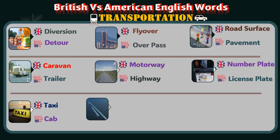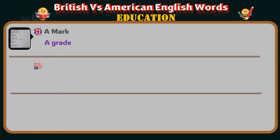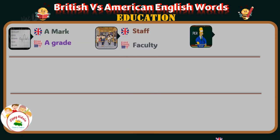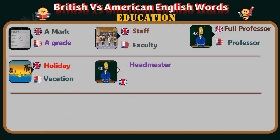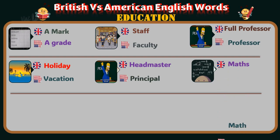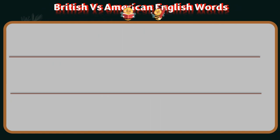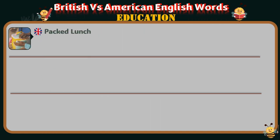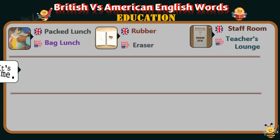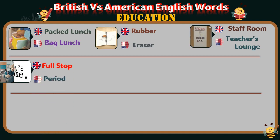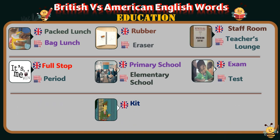Education: British — a mark; American — a grade. British — staff; American — faculty. British — full professor; American — professor. British — holiday; American — vacation. British — headmaster; American — principal. British — maths; American — math. British — open day; American — open house. British — break time; American — recess. British — packed lunch; American — bag lunch. British — rubber; American — eraser. British — staff room; American — teacher's lounge. British — full stop; American — period. British — primary school; American — elementary school. British — exam; American — test. British — kit; American — uniform.